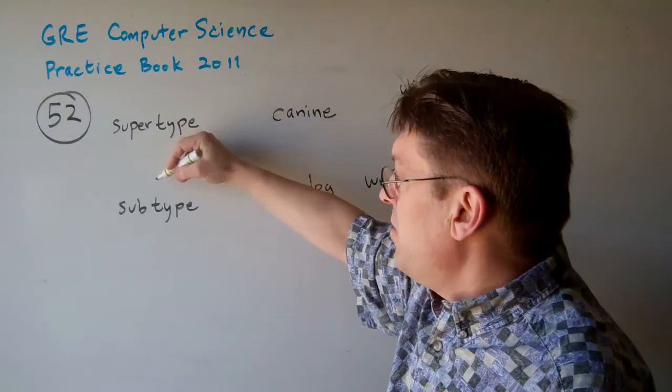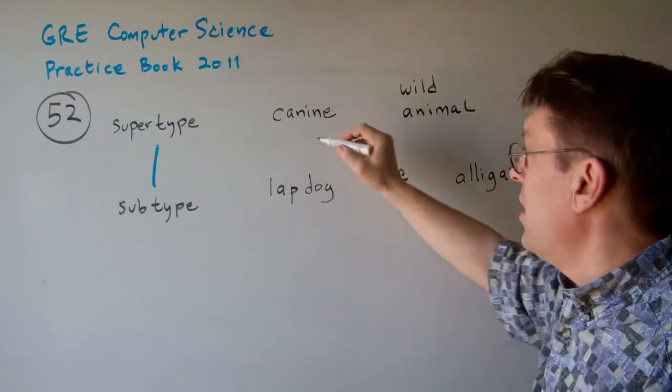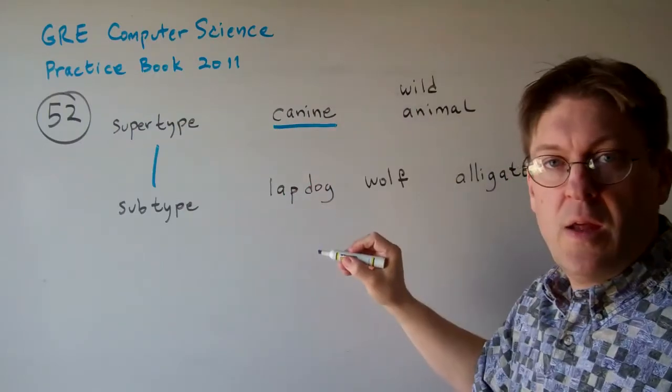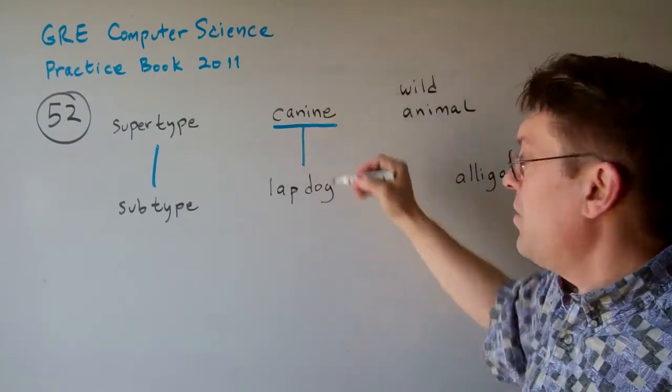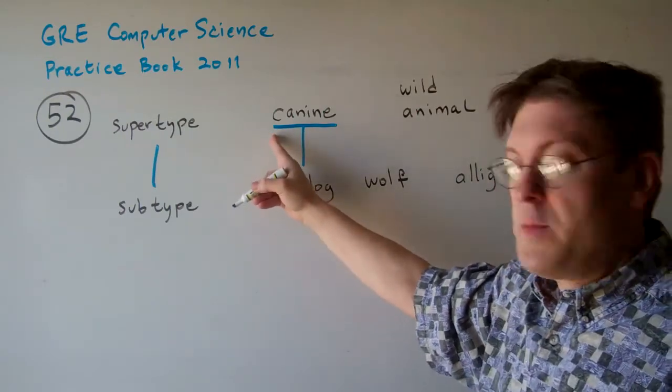A subtype, of course, belongs to a supertype. Think about it this way. Think about if you have a canine. A canine might be a lap dog. So the subtype is lap dog and the supertype is canine.